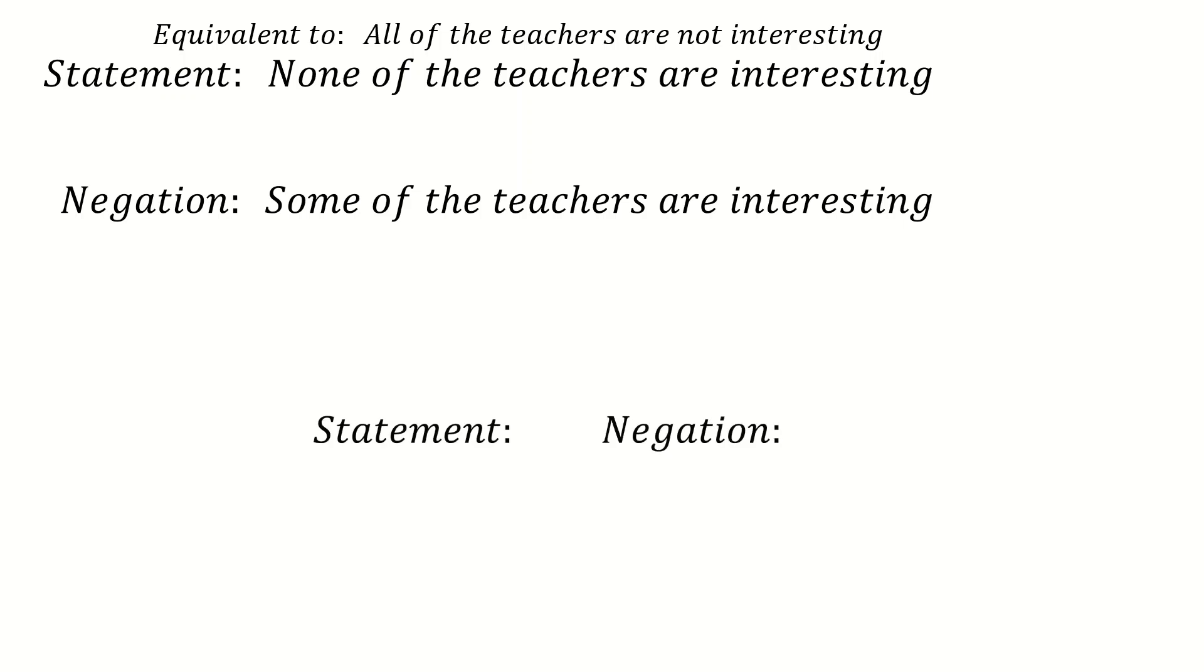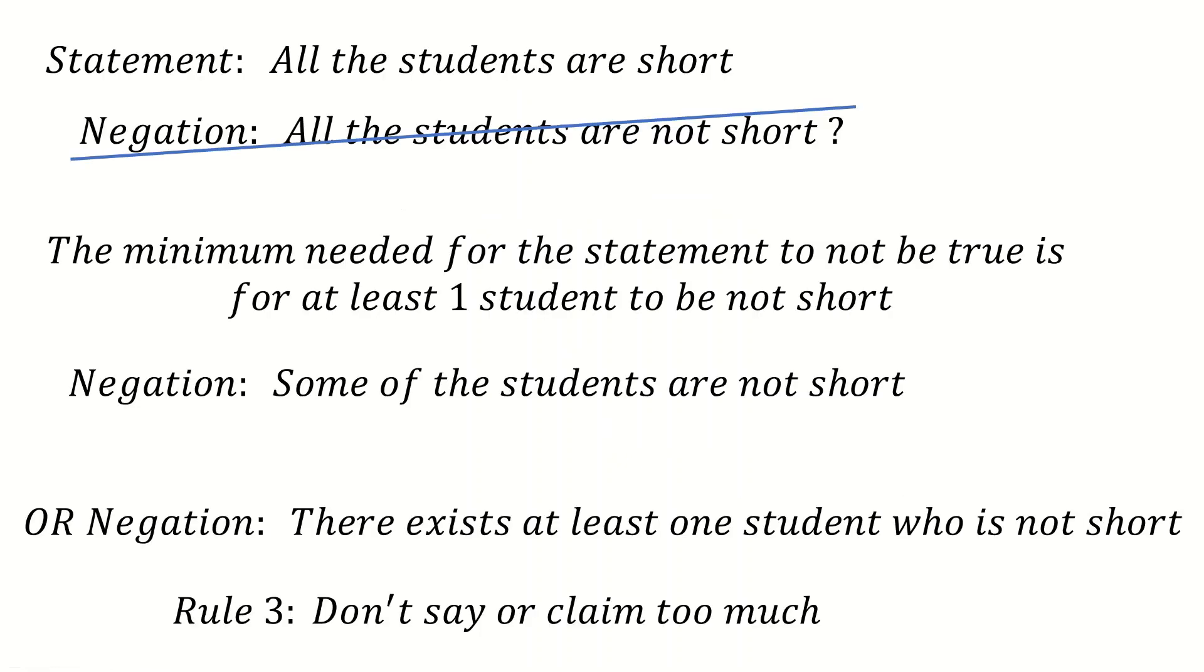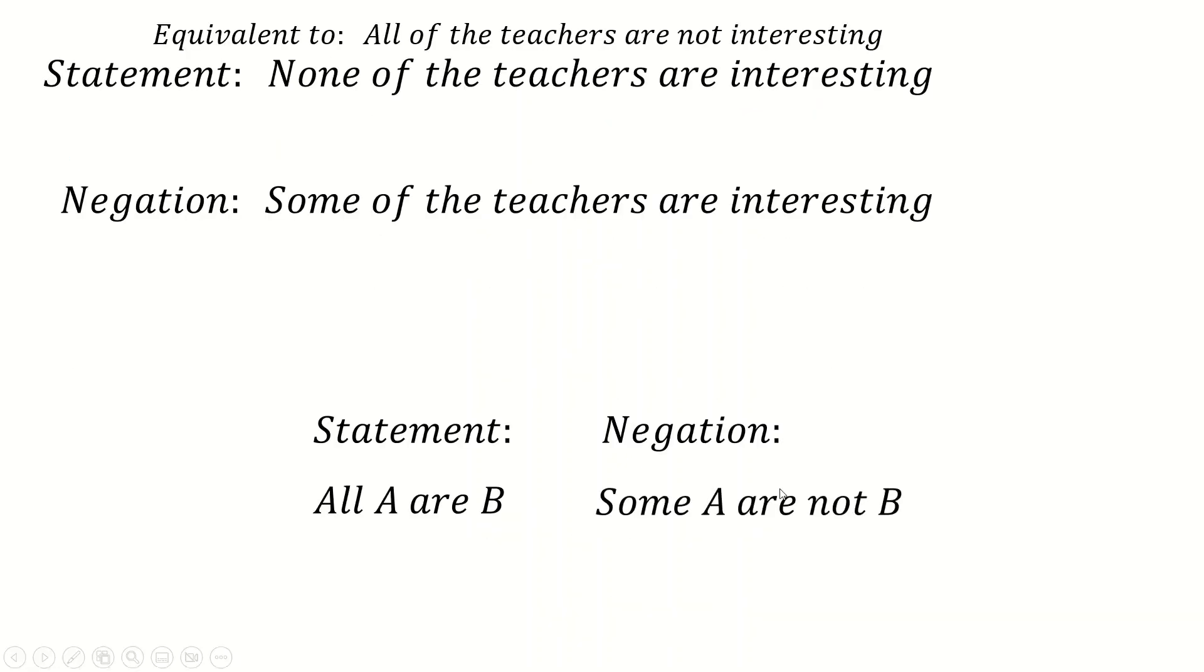And so we can build up this little table if we want to. If the statement is all A are B, A and B are just representing whatever made up stuff I was saying before. All A are B, the negation is some A are not B. So the example we had was all the students are short. Negation is some of the students are not short.